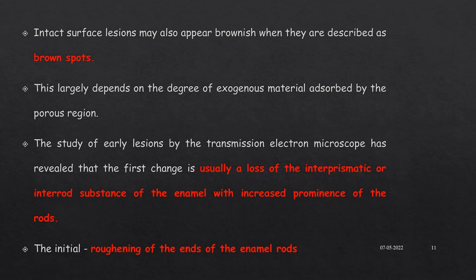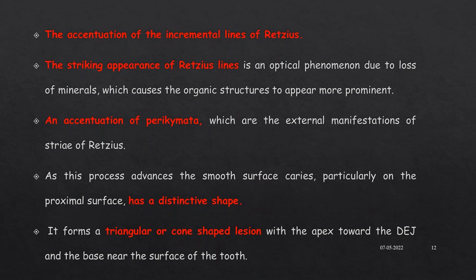Intact surface lesions may also appear brownish in color due to exogenous material absorbed onto the tooth surface. Studies using the transmission electron microscope have revealed that the first change is usually a loss of interprismatic or interrod substance of the enamel, which increases the prominence of the rod. The cementing substance between the enamel rods is lost, leading to prominence of the rods. Initial roughening of the ends of the enamel rods occurs, causing accentuation of the incremental lines of Retzius.